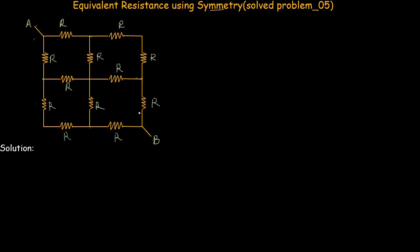Let's first analyze this network to see if there exists a horizontal symmetry. We draw a line joining points A and B. If you rotate point A and point B in the anticlockwise direction by 45 degrees, you will see that this is a horizontal symmetry in this network because this side of the network is the mirror image of the other side. So we can say that there exists a horizontal symmetry in this network.